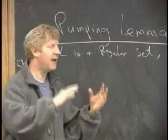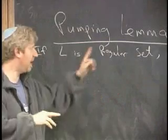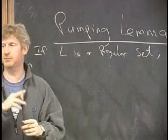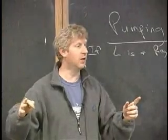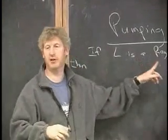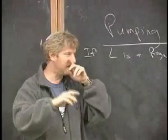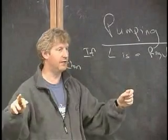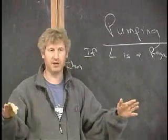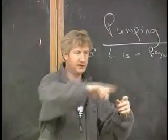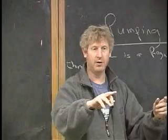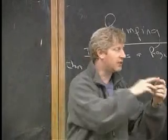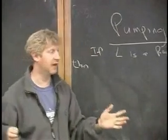If L is a regular set, then if you have a string in L that's supposed to be accepted by this machine, that's long enough, long enough meaning longer than the number of states in the machine that accepts it, so that it has to loop. If you have a string that's supposed to be accepted and it's long enough so that it has to loop in its computation, then there exists that loop and then if you pump up symbols in that loop, the resulting pumped up strings also have to get accepted. That's basically what it says.